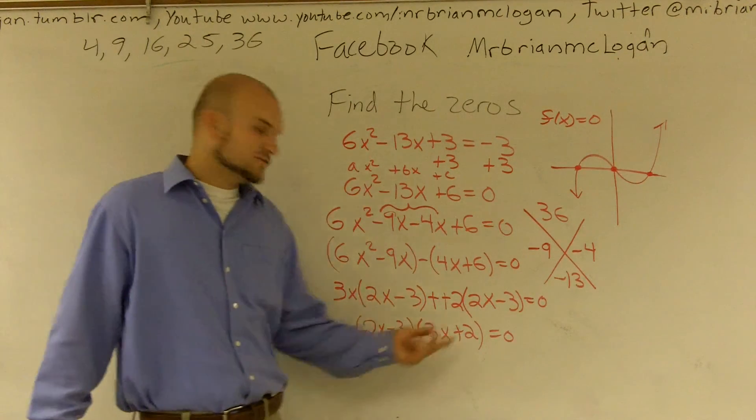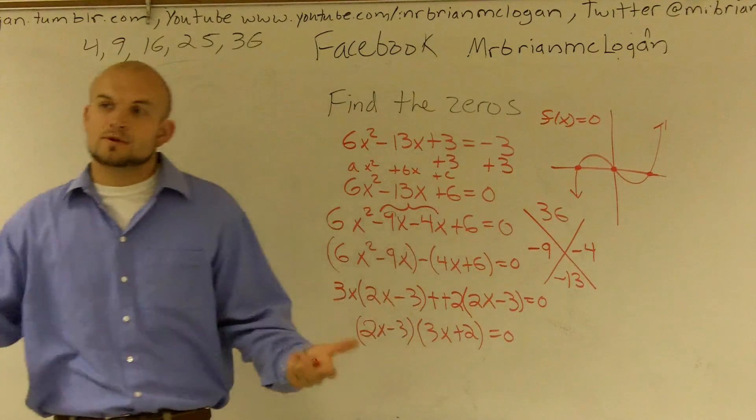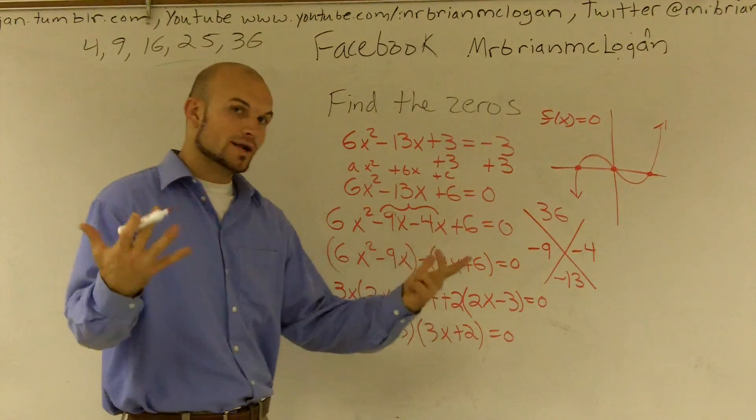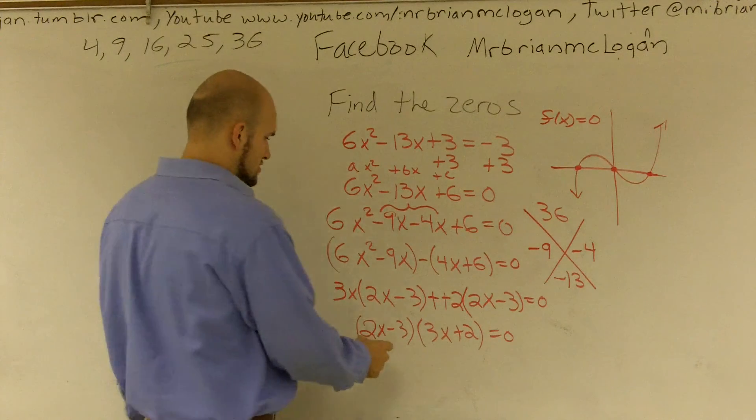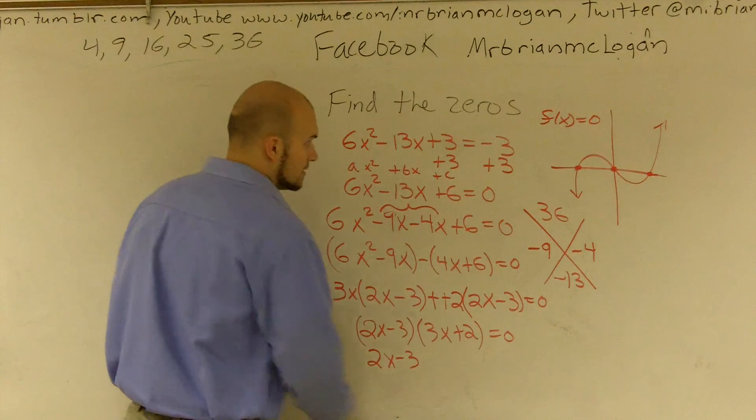So whenever you have a number times a number equals 0, one of those numbers has to equal 0. When you have a binomial times a binomial, one of those has to equal 0. So we're just going to solve for what values would they equal 0. Let's do that work over here.